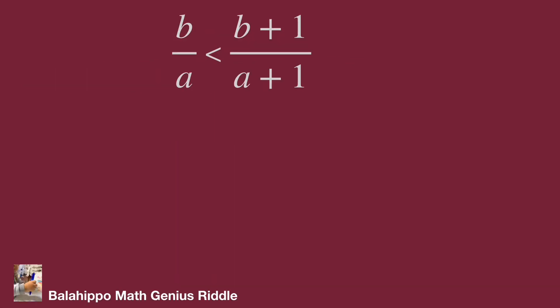The question is to prove two fractions: b over a is less than b plus one over a plus one. What's the meaning for this?